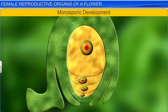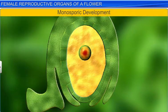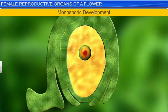The functional megaspore enlarges and simultaneously undergoes mitotic division to form an embryo sac. This type of formation of the embryo sac from a single megaspore is known as monosporic development.